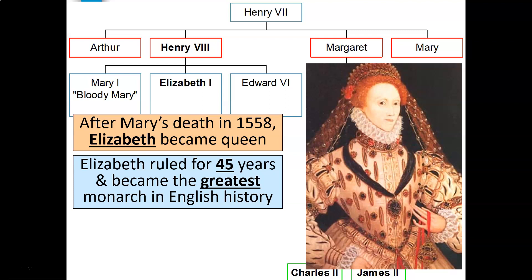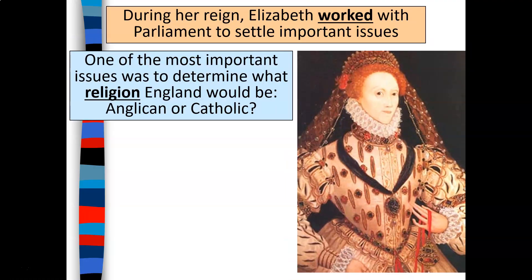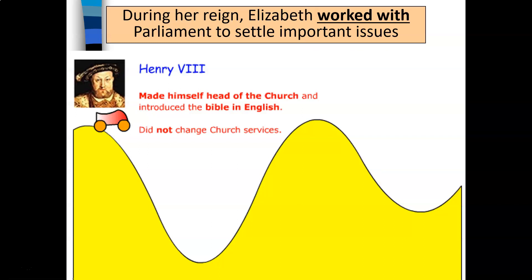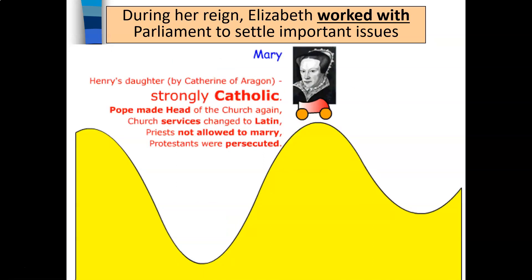Elizabeth ruled for 45 years and became the greatest monarch in English history. She refused to share power and did not marry, which is why she's known as the Virgin Queen. During her reign, Elizabeth worked with Parliament to settle important issues — including what religion England would follow. Henry the Eighth had made himself head of the church and introduced the Bible in English. His son Edward the Sixth was a strong Protestant who introduced new prayer books, had church services in English, allowed priests to marry, and destroyed church decorations. Mary, a strong Catholic, reversed these changes — restoring the pope as head of the church and returning services to Latin.